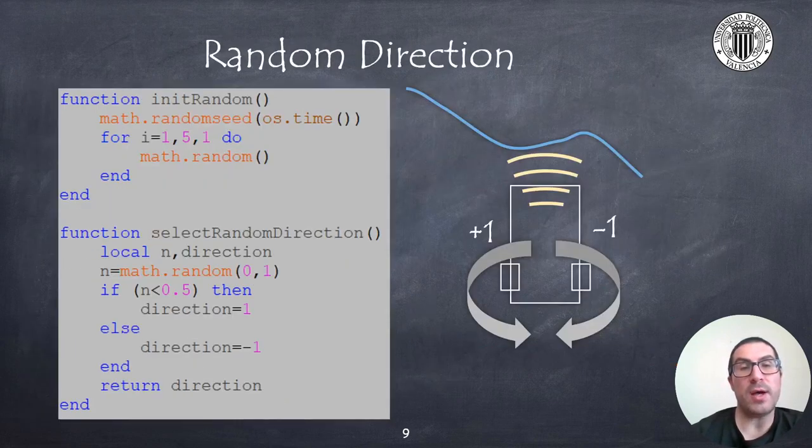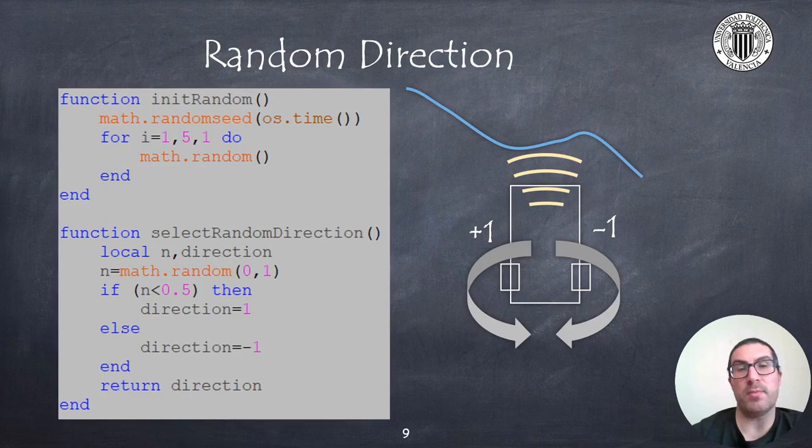Also, I'm providing here a couple of functions to introduce some randomness. This is useful when detecting the obstacle with the ultrasound sensor. Basically, what you have to do is call this function every time you find a new obstacle, so you need to provide a new direction, either to the left or right. In this case, the init_random function I'm showing you here must be called once in the initialization code, while the select_random_direction must be evaluated every time you want to change your direction. It will return basically plus one or minus one depending on each of the directions.